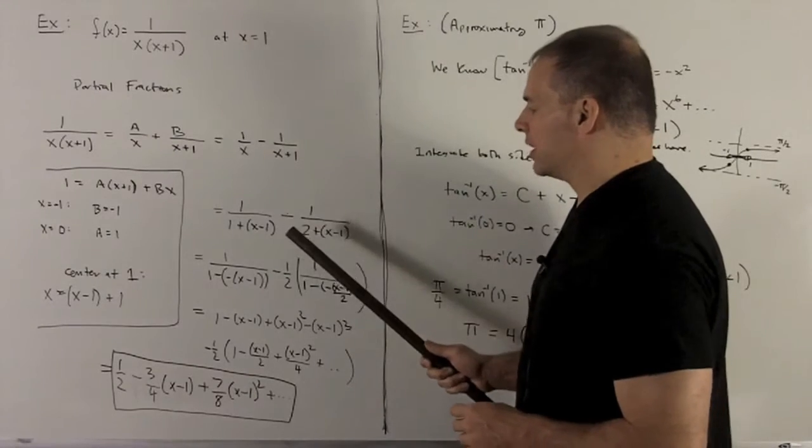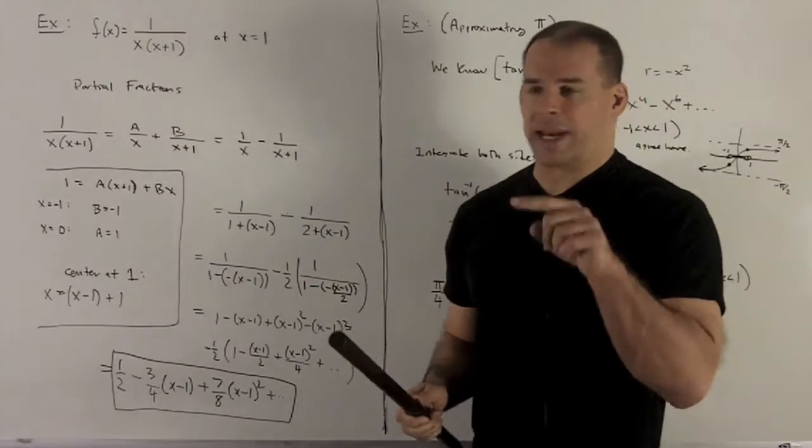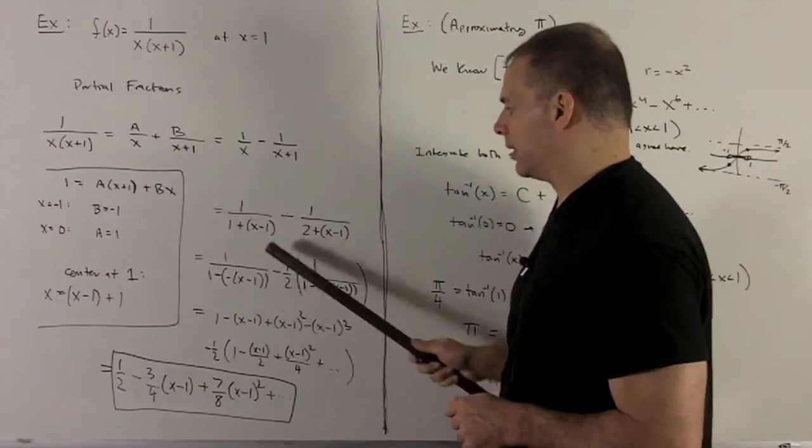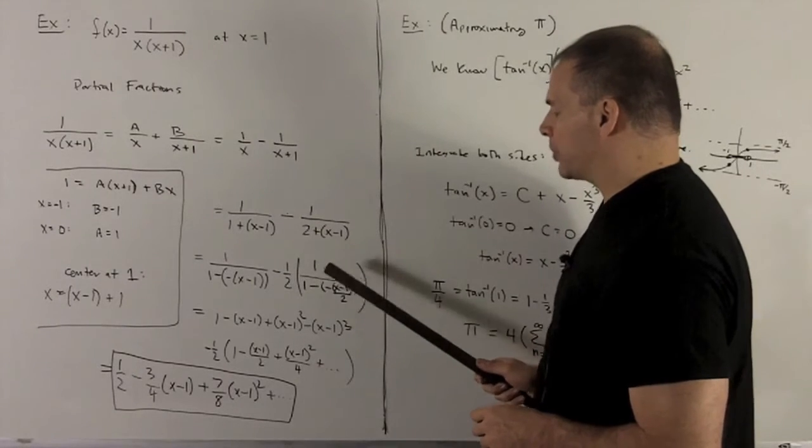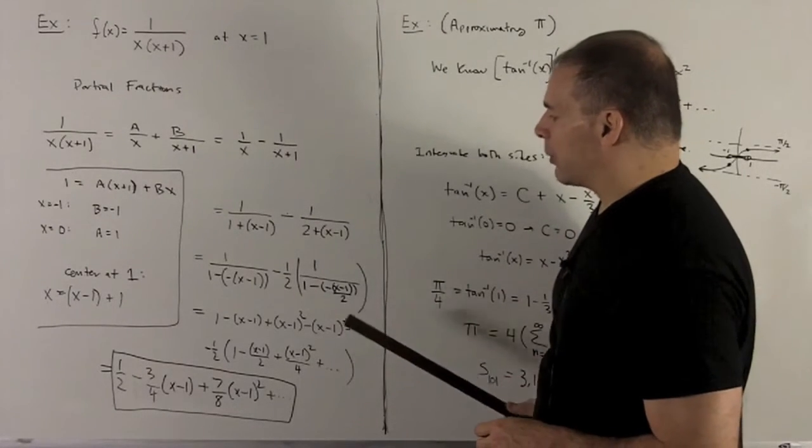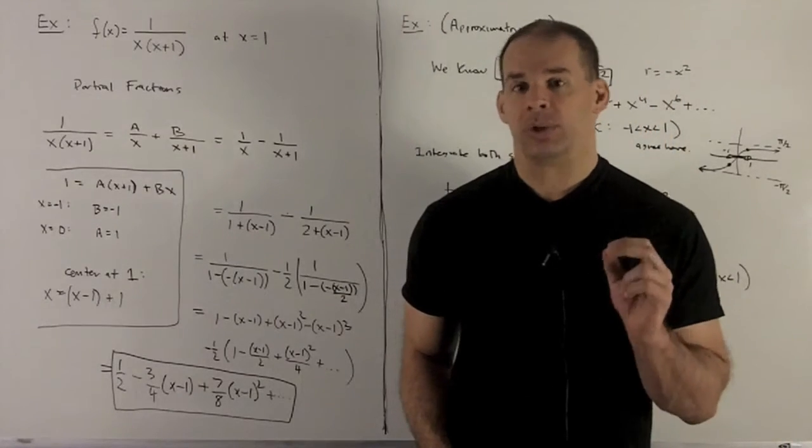And then we know the way we deal with this is we're going to turn them both into 1 over 1 minus box. So that's going to be the first one. Second one, we're going to pull the half out, and then I get 1 over 1 minus box as so. And then we're just going to add up two power series.